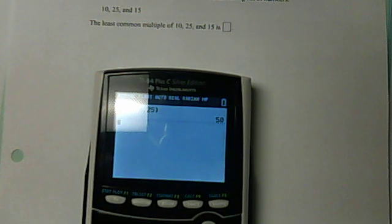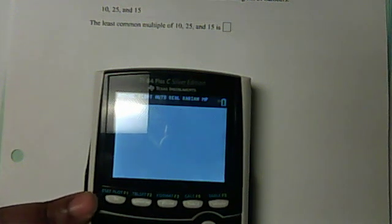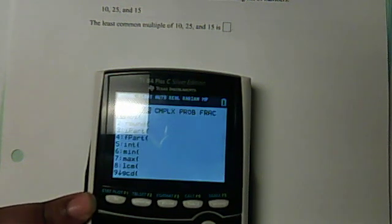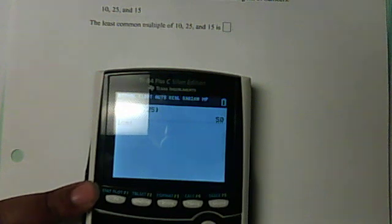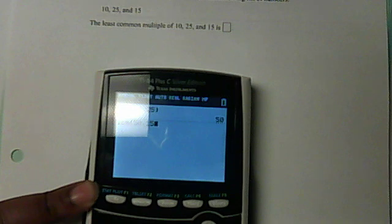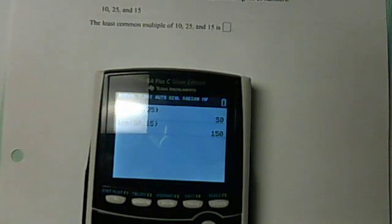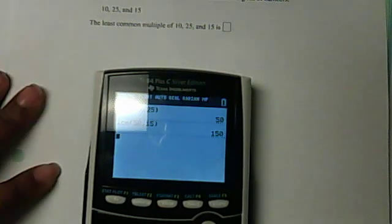And now I'm going to do the same thing over again. I'm going to go to math. I'm going to go over to num, hit number 8 again, and now I'm going to put in that 50, comma, my last number, which is 15 because I'm trying to find the LCM between 10, 25, and 15. Close the parentheses. Hit enter. So it's 150. So the LCM between 10, 25, and 15 is 150.